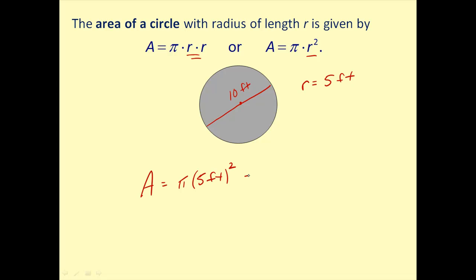So the area equals pi times 5 feet squared, which gives us 25 pi feet squared. Pi is a constant, but normally we want a decimal approximation. Multiplying 25 times 3.14, we get approximately 78.5 square feet.